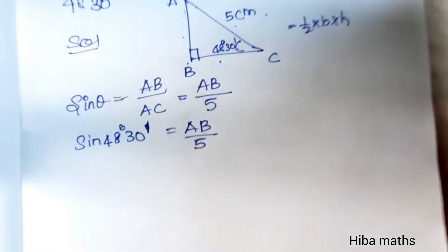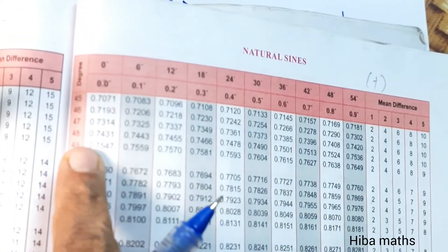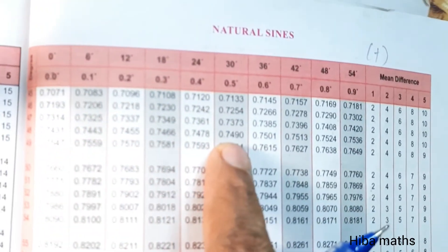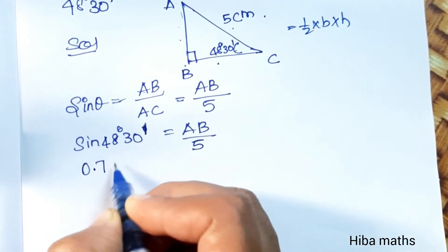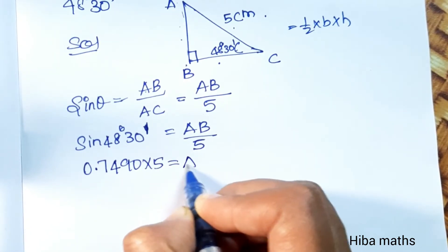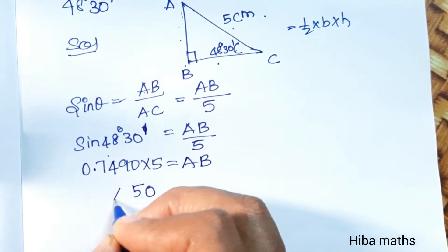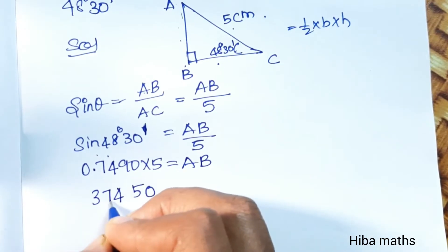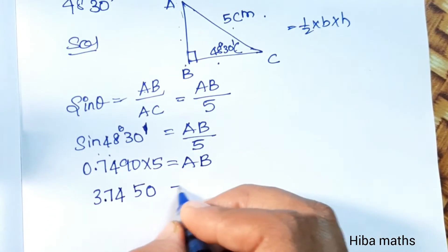Sin 48 degrees 30 minutes is 0.7490. Multiplying 0.7490 by 5 equals AB. 3.7450. This is AB. AB is our height.